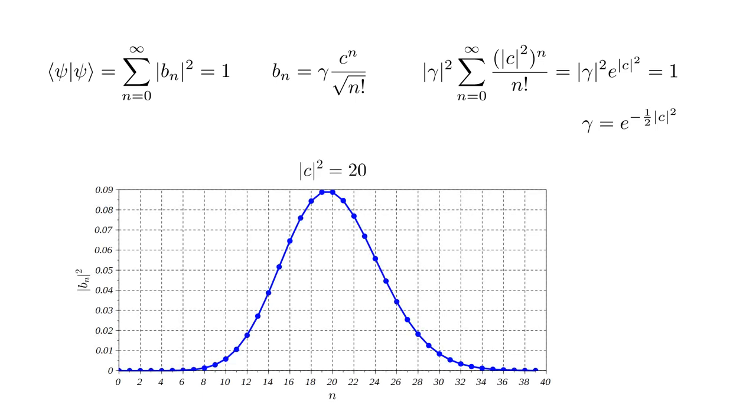Here's a plot of |bn|² versus n, for |c|² equals 20. We see that the most probable number of photons is near 20, but there are significant probabilities of the field having anywhere from about 15 to 25 photons. From this distribution, we can calculate the expected, or mean, number of photons, denoted by n inside angled brackets.